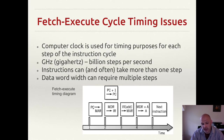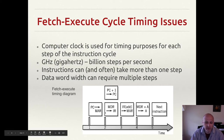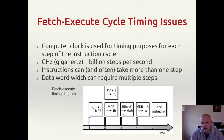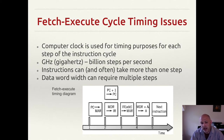First we take the value of the program counter and put it into the memory address register. Then we get whatever's in the memory data register and move it to the instruction register. Then after we decode the instruction register's operand — which is the address — we put it into the memory address register. Then we take the contents of the memory data register and move it to the accumulator, and once all this is done, we're ready to go on to the next instruction.